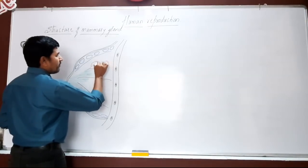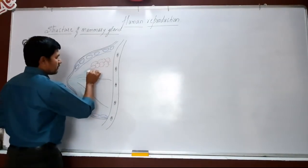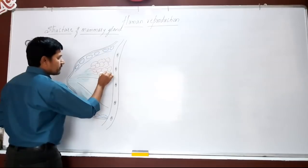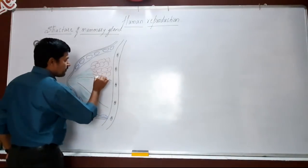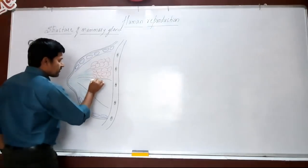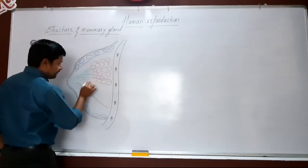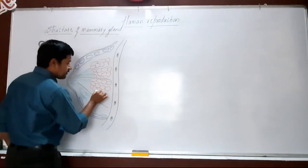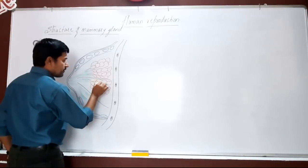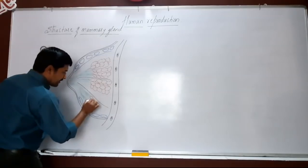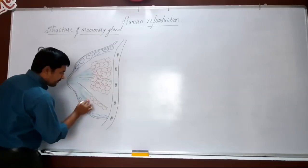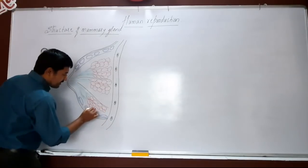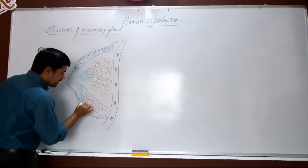These terminal structures are called mammary alveoli. Each one represents a mammary alveolus. These mammary alveoli are numerous in number and are present in the mammary glands. These alveoli have cells — the milk secreting cells are also present there.